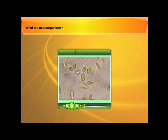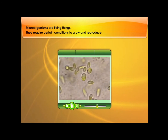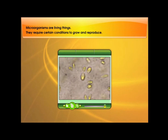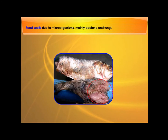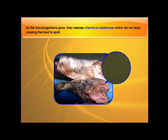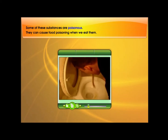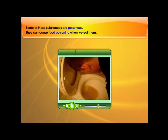What are microorganisms? Microorganisms are living things. They require certain conditions to grow and reproduce. Food spoils due to microorganisms, mainly bacteria and fungi. As the microorganisms grow, they release chemical substances which act on food, causing the food to spoil. Some of these substances are poisonous. They can cause food poisoning when we eat them.